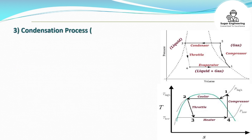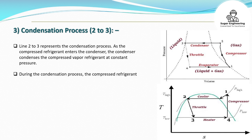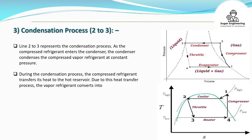3. Condensation Process (2 to 3): Line 2 to 3 represents the condensation process. As the compressed refrigerant enters the condenser, the condenser condenses the compressed vapor refrigerant at constant pressure.